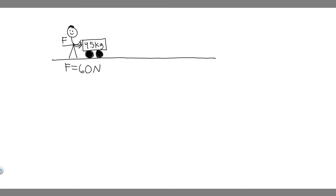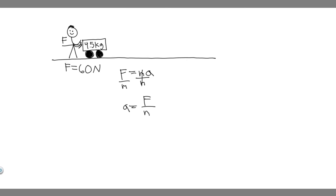The way we're going to solve this problem is by using Newton's second law, which tells us the net external force is equal to the mass of an object times its acceleration. So if we want to solve for acceleration, we can divide both sides by M, and so essentially the acceleration is the net external force divided by the object's mass.